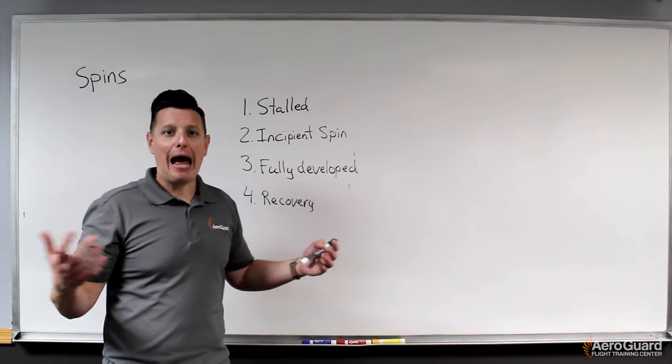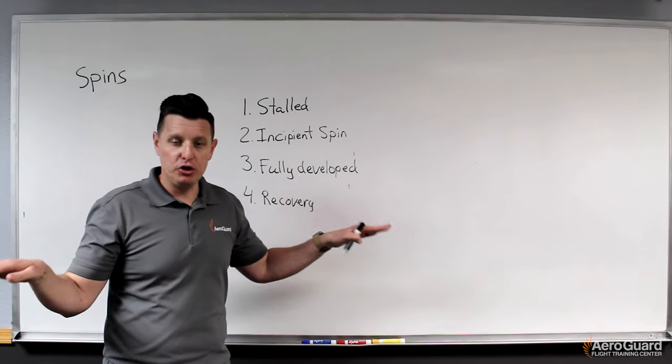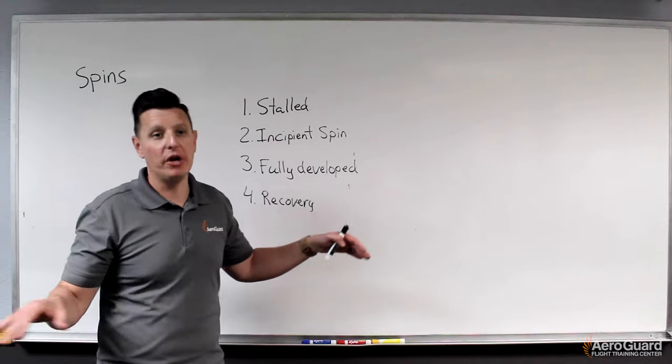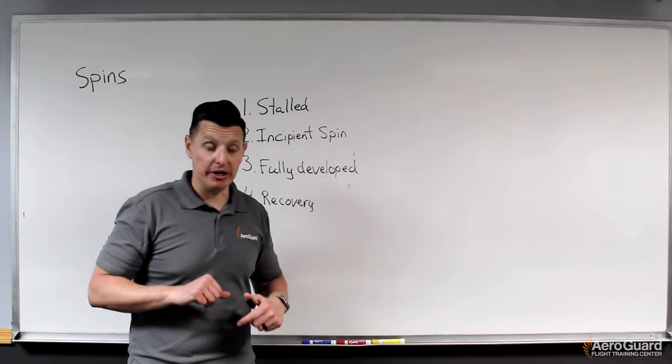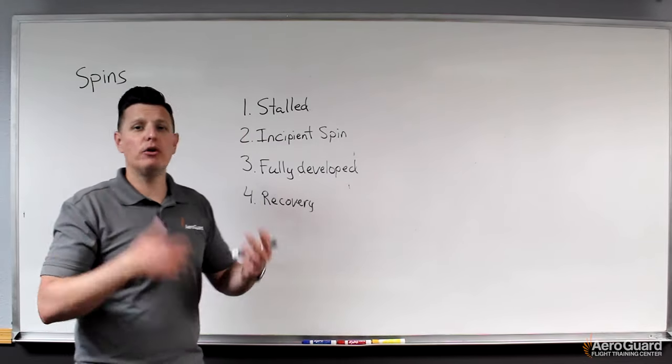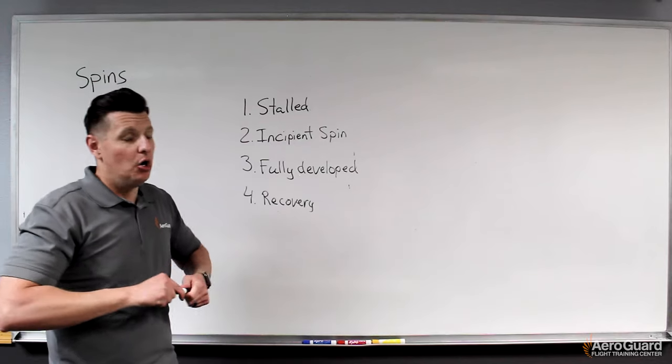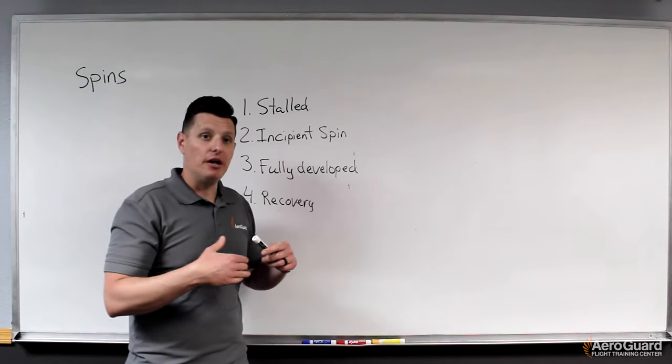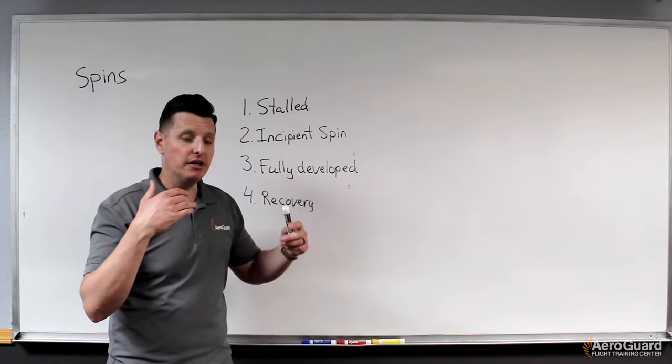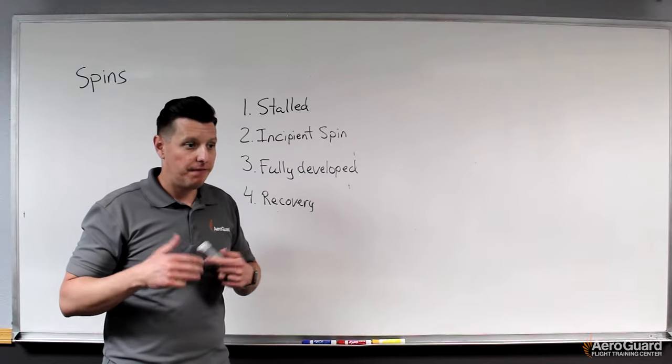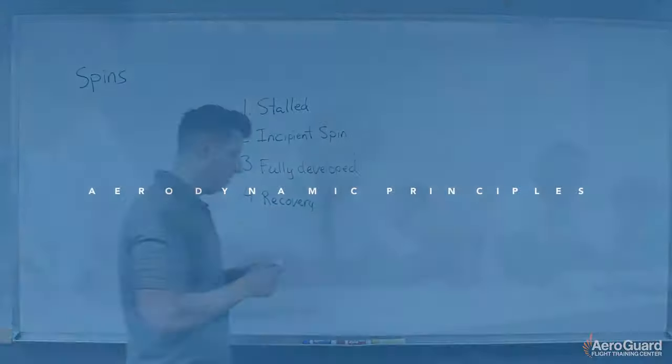And what that equates to is, in this example, if that were to occur, we would say then that the right wing is more stalled than the left wing. The left wing is still stalled, but maybe is closer to the critical angle of attack. And the right wing, in this case, is much greater than the critical angle of attack. What will that result in? What would happen if we have two stalled wings, but one wing is more stalled than the other wing? Well, in order to understand that a little bit more, what we want to do is understand the physics behind what's happening here.